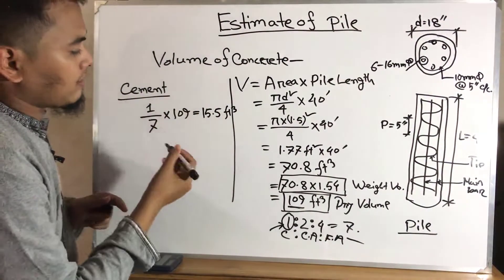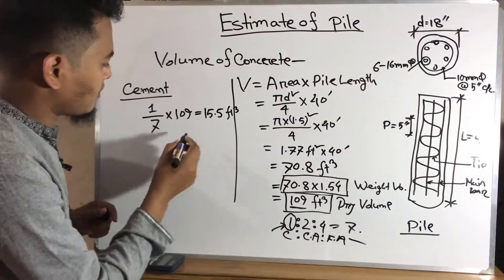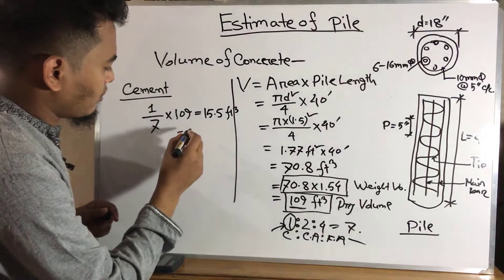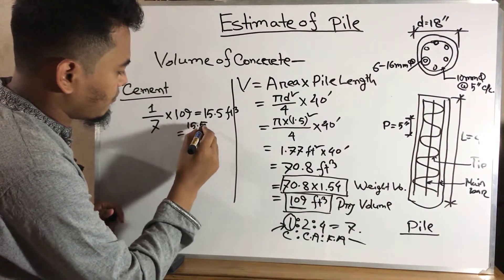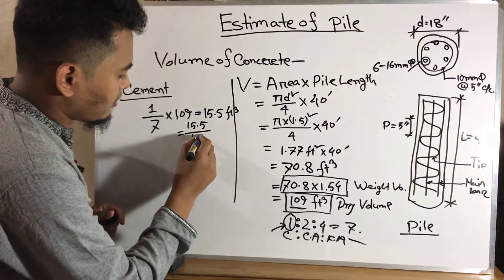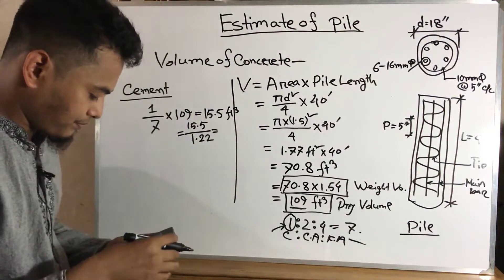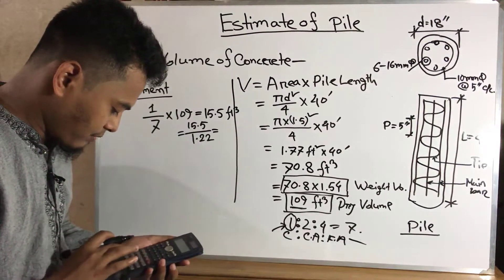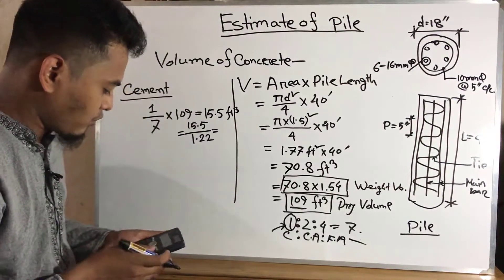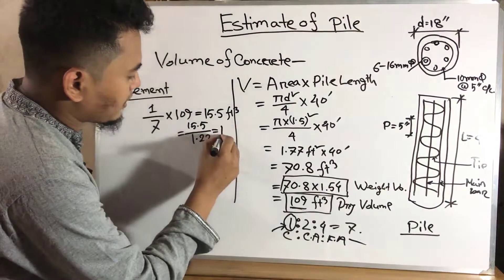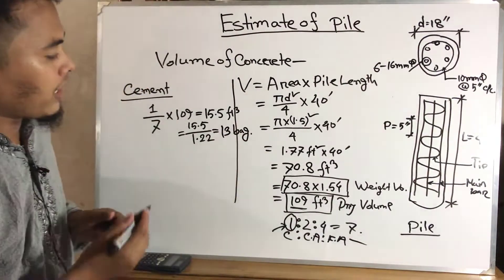This is the quantity of cement. Now we convert it to number of bags: 15.5 divided by 1.22 equals approximately 12.7, which rounds to about 13 bags. So approximately 30 bags of cement.